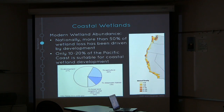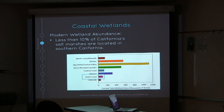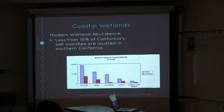Only 10 to 20% of the Pacific coast is suitable for wetland development. As you see in this figure, we only see small pockets of really dense wetlands of 16 to 25% in few spaces, whereas most of the coast is yellow to white, which is less than 4%. Also, less than 10% of California salt marshes are located in Southern California, and we only see a small percentage of the historic marshes remaining today.